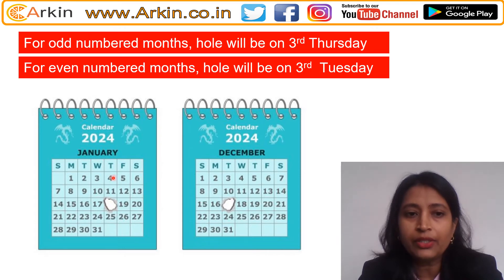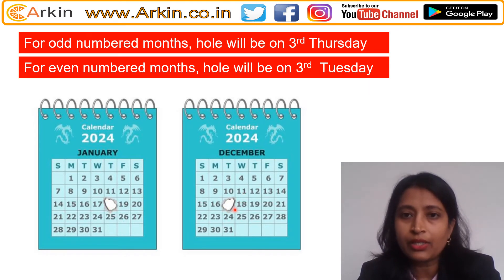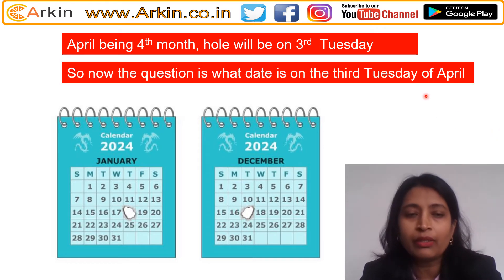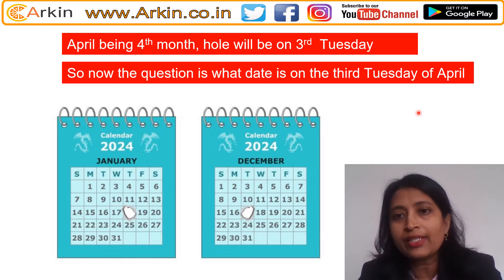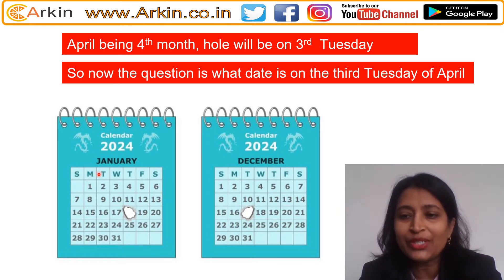February, being the second (even) month, will have the hole on the third Tuesday. So the pattern is: January — third Thursday, February — third Tuesday, March — third Thursday, April — third Tuesday. April is the fourth month, so the hole will be on the third Tuesday of April. The question simplifies to: what date is the third Tuesday of April?